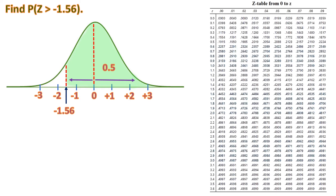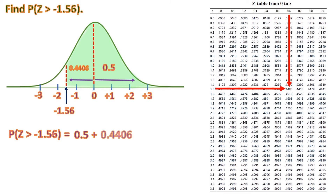Looking at the z-table for 1.56: row 1.5 and column 0.06. It doesn't matter whether it's negative or positive, because the distance from 0 to negative 1.56 is the same as 0 to positive 1.56 — so just ignore the negative sign when reading the table. The area is 0.4406. Therefore, the probability of z greater than negative 1.56 equals 0.5 plus 0.4406, which equals 0.9406.